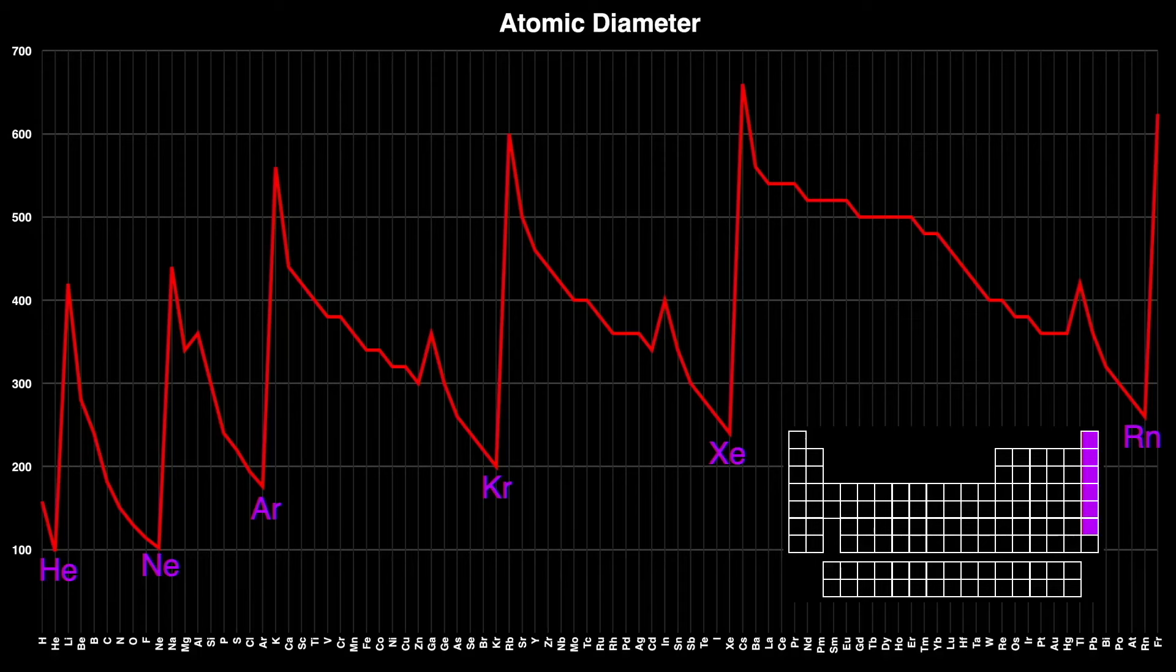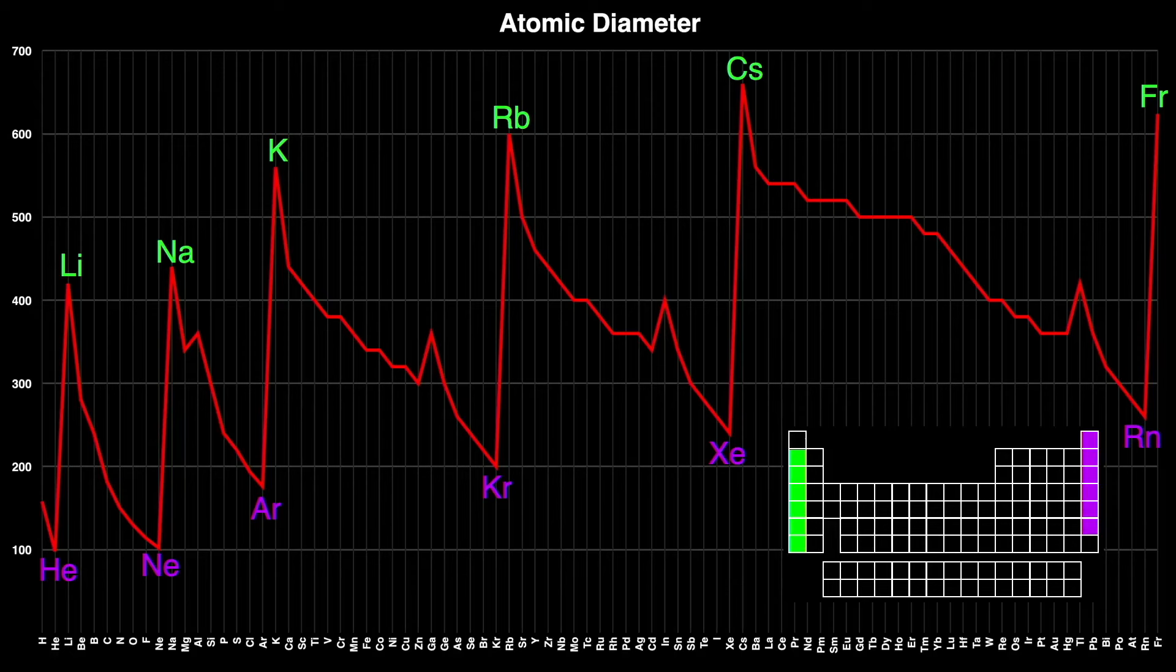The alkali metals, lithium, sodium, potassium, rubidium, cesium, and francium in green, are the largest atoms of their respective rows.